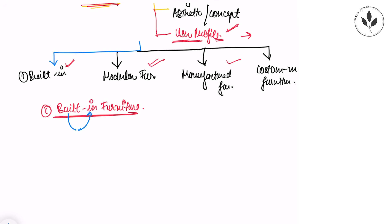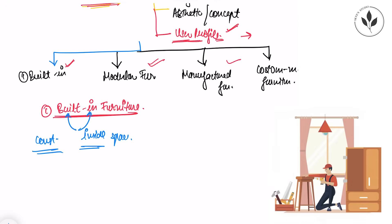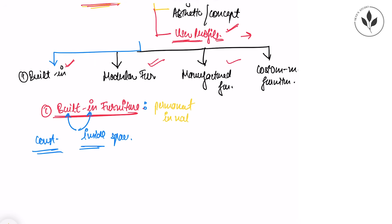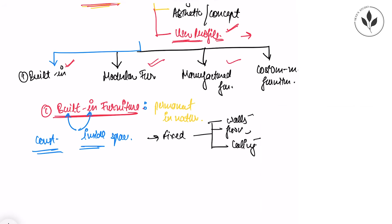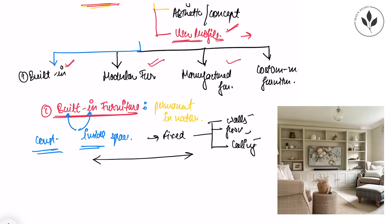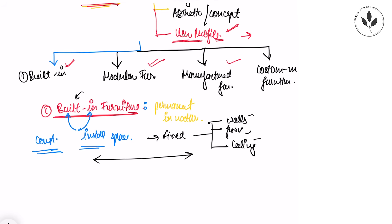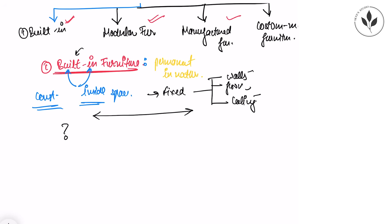Let's start with the first type, which is built-in furniture. As the name suggests, built-in is something which is built or constructed inside your space. It will always be permanent in nature because the structure will be permanently fixed with your walls or ceilings. It can be constructed along your walls, floors, or ceilings, depending on the type of furniture being constructed. It becomes an integral part of your complete interior space.